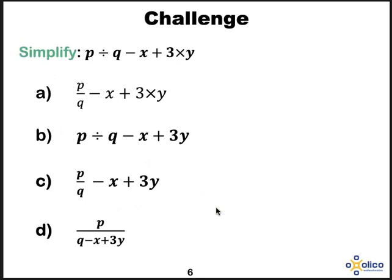Look at this question next. Did you choose A? No, there is a times sign. Did you choose B? No, there is a divide sign. Did you choose C? Yes. If you chose D, the problem is that this is only dividing by Q. There's no brackets to say divide by all of it.